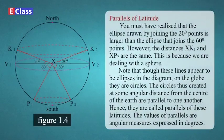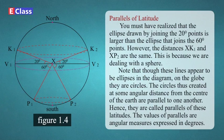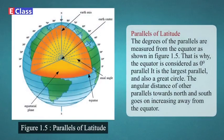Explanation — Parallels of Latitude: You must have realized that the ellipse drawn by joining the 20-degree points is larger than the ellipse joining the 60-degree points. However, the distances X–K1 and X–P2 are the same, because we are dealing with a sphere. Note that though these lines appear to be ellipses in the diagram, on the globe they are circles. The circles created at some angular distance from the center of the earth are parallel to one another — hence they are called parallels of latitude. The values of parallels are angular measures expressed in degrees, measured from the equator as shown in Figure 1.5. The equator is considered as the 0-degree parallel; it is the largest parallel and also a great circle. The angular distance of other parallels towards north and south goes on increasing away from the equator.